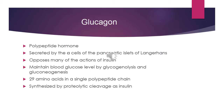First of all, what is glucagon? Glucagon is a polypeptide hormone, just like insulin, but it is produced by the alpha cells of the pancreas. It opposes many actions of insulin. Insulin is an anabolic hormone, while glucagon is a catabolic hormone, so the effects of both are opposite to each other.